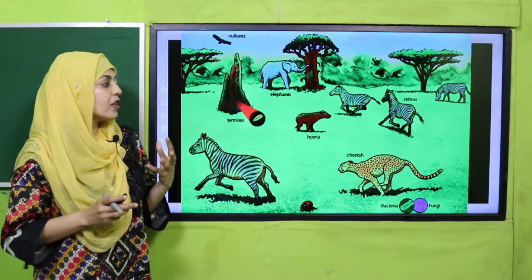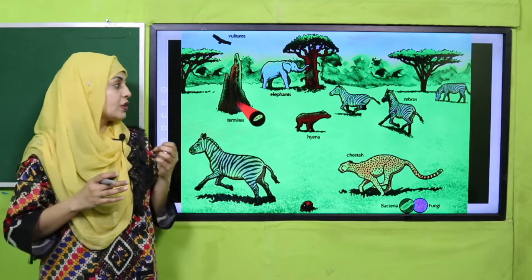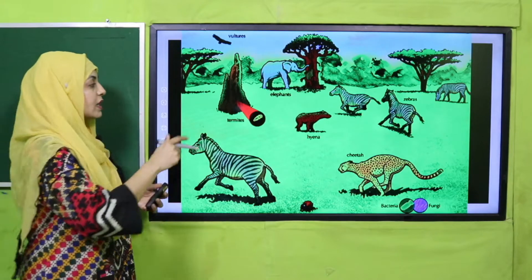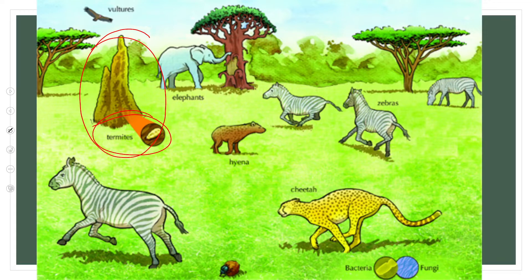In this picture you can see biotic and abiotic factors together. There is a tree where there are termites. Different carnivores are after the herbivores and eating meat. Plant-eating animals are eating the plants. This is how there is a balance in this ecosystem.